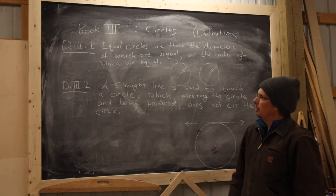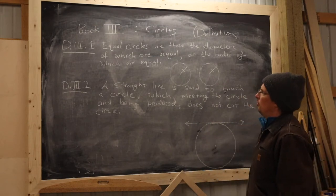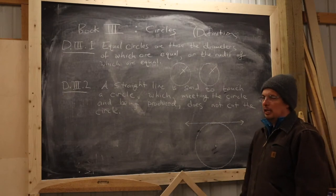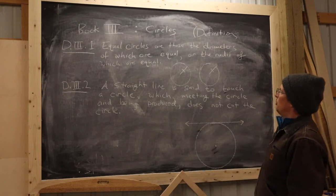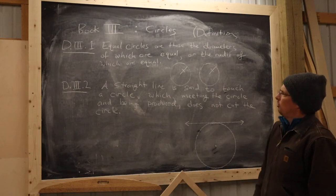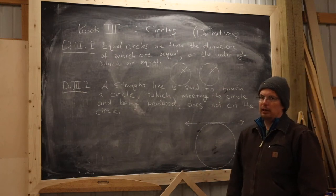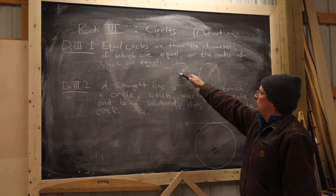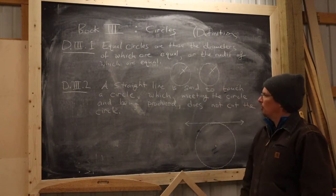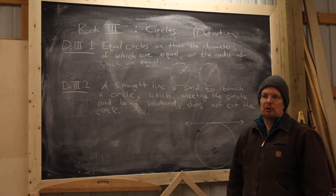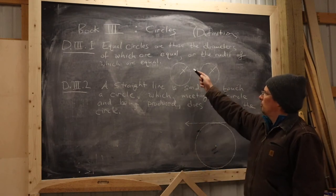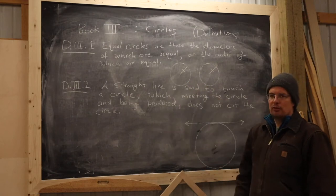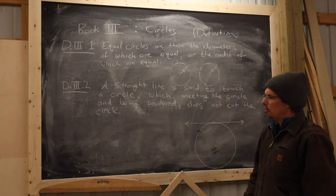The first definition from Book 3 establishes what it means for two circles to be equal. Equal circles are those the diameters of which are equal, or the radii of which are equal. What makes circles equal is if the distance from the center to any point of the perimeter is the same between the two circles, or the length passing through the center that cuts the circle twice — those are equal.